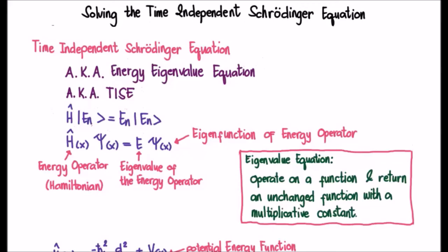In this case, because we're using the Hamiltonian energy operator, we get back the energy eigenvalue. So the language or terminology here is the eigenvalue is of the operator. So it's the eigenvalue of the Hamiltonian operator.